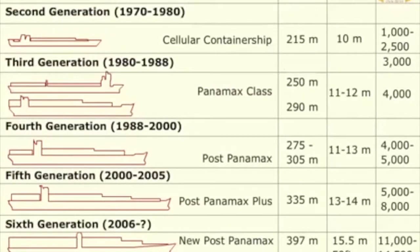The major classifications of container ships are based on their capacity to carry containers. However, some vessels are categorized by their design, i.e., gear. A vessel may have its own container handling gear like cranes and derricks. Other design types include hatch coverless vessels, where the holds do not have hatch covers for all cargo holds, and cellular container vessels.